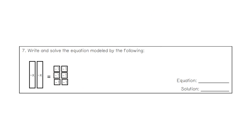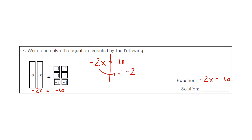For number 7, we write the equation: negative 2x equals negative 6. We're matching up our pieces to make our equation. The negative 2 is on the left-hand side and the negative 6 is on the right-hand side. The 2 and the x written together means multiply, so we do the opposite — we divide. Negative 6 divided by negative 2 gets us a value of positive 3. Two negatives make a positive answer.